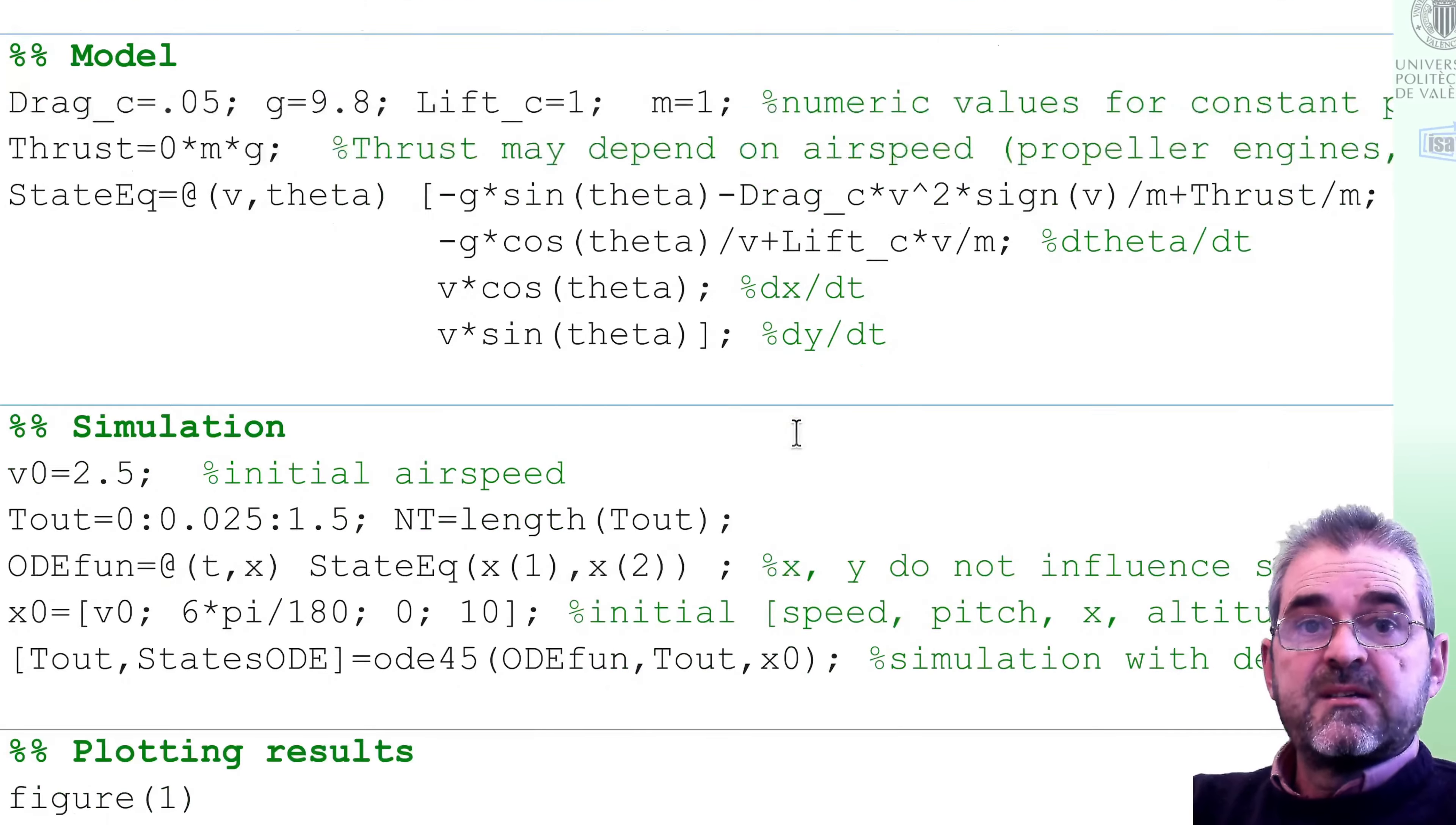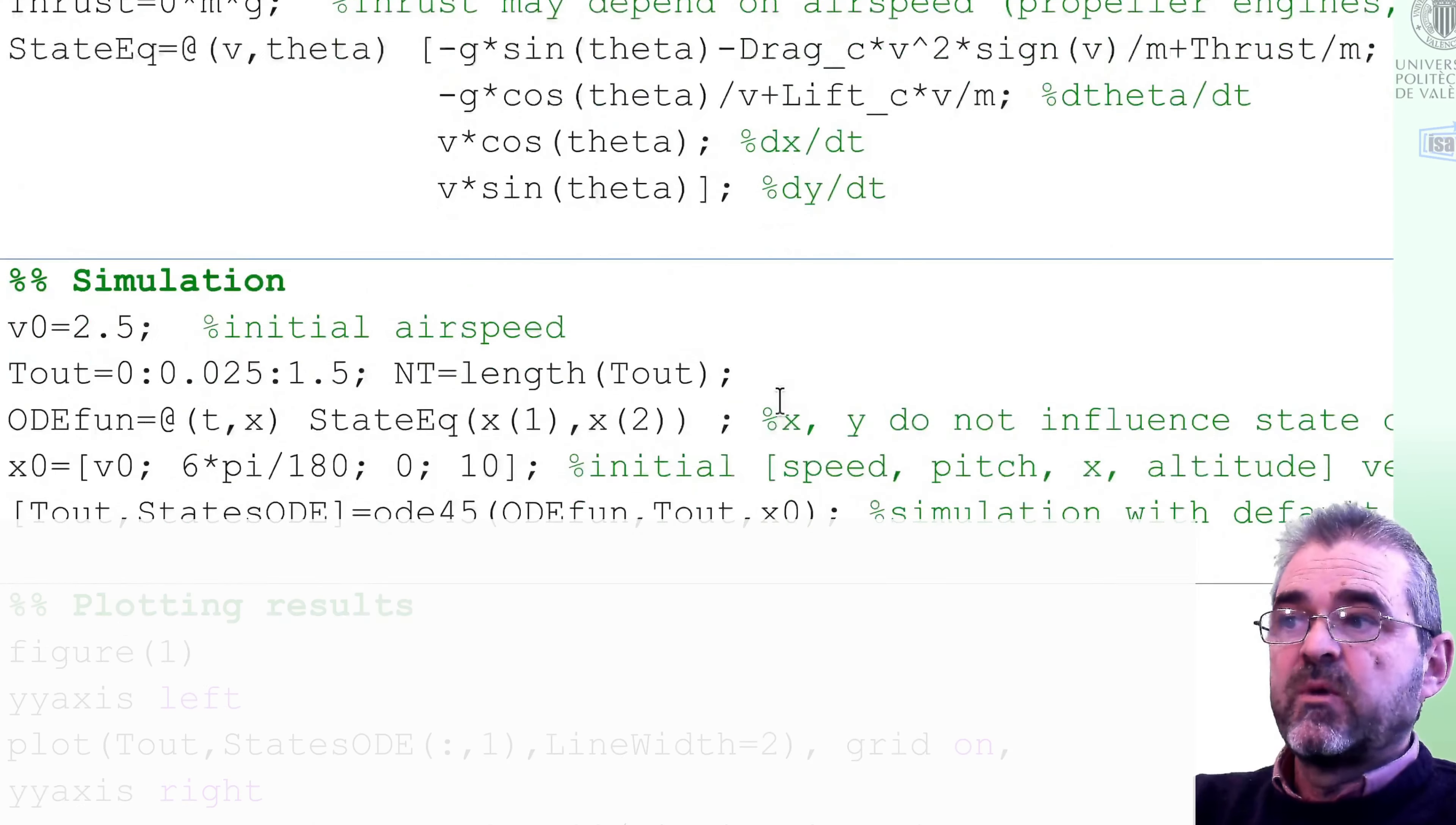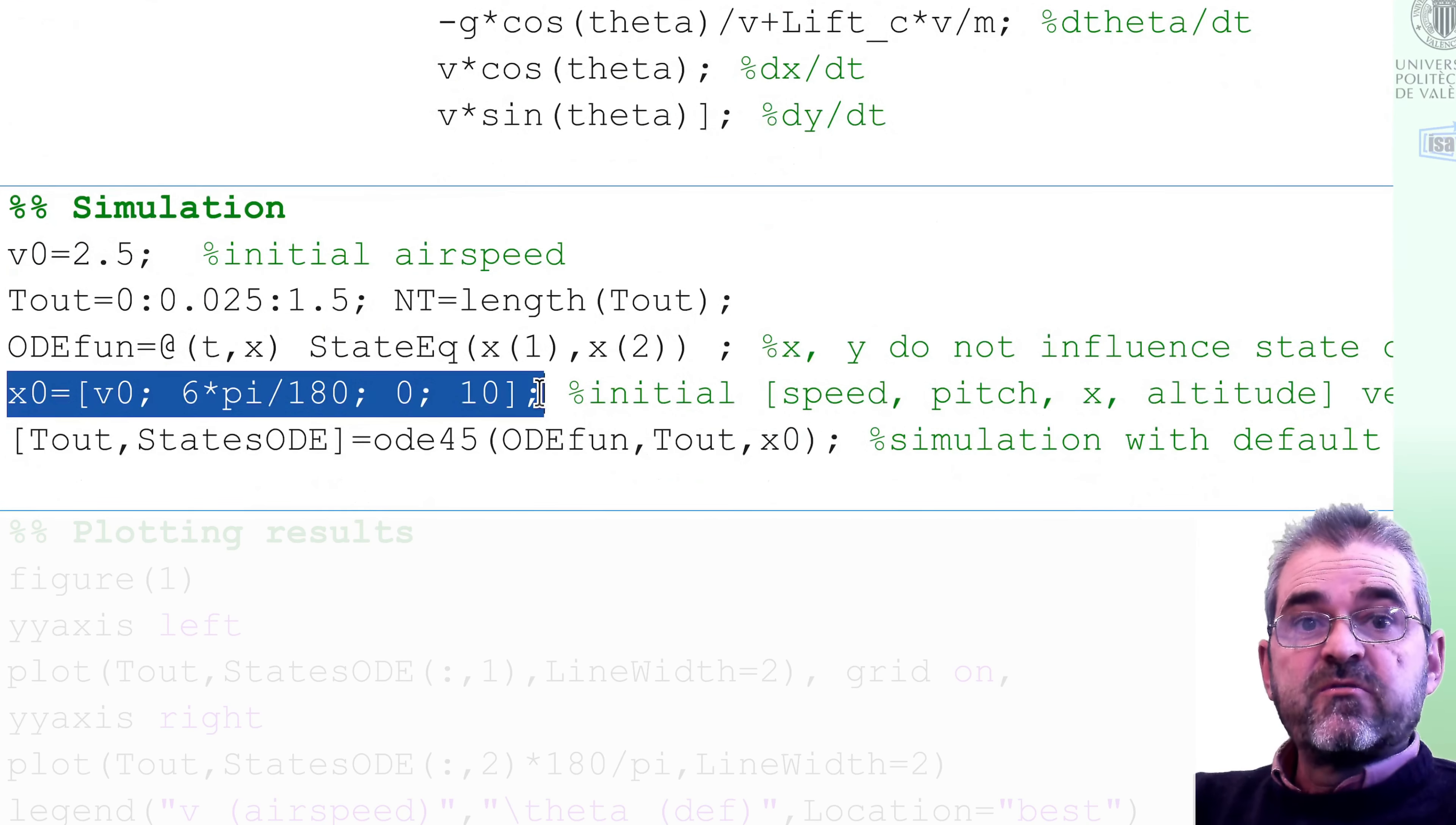How can we simulate that model? Well, we need to set some initial conditions for the numerical differential equation solver. Initial speed, 2.5. Initial pitch, six degrees. Initial longitudinal position, set to zero. And initial altitude, set to 10 units.